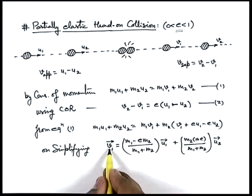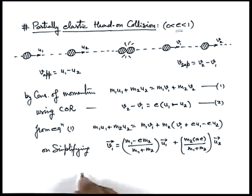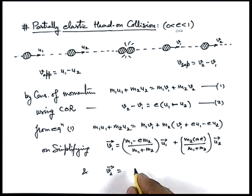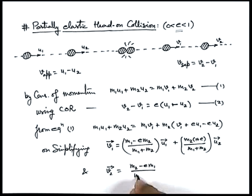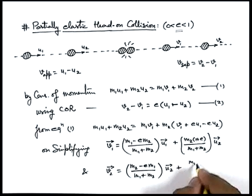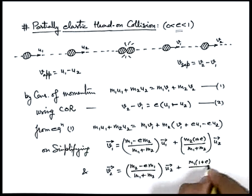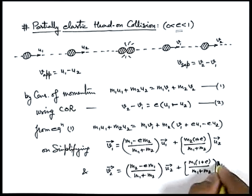Similarly, substituting the value of v-one into either expression we get the value of v-two. So we can write v-two equals (m-two minus e·m-one) upon (m-one plus m-two) into u-two, plus m-one into (1 plus e) upon (m-one plus m-two) into u-one.